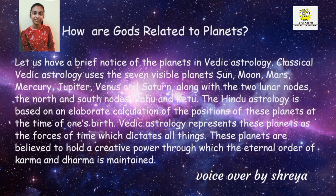Let us have a brief look at the planets in Vedic Astrology. Classical Vedic Astrology uses seven visible planets: Sun, Moon, Mars, Mercury, Jupiter, Venus and Saturn, along with the two lunar nodes — the north and south nodes, Rahu and Ketu. Hindu Astrology is based on an elaborate calculation of the positions of these planets at the time of one's birth. Vedic Astrology represents these planets as forces of time which dictate all things, believed to hold a creative power through which the eternal order of karma and dharma is maintained.